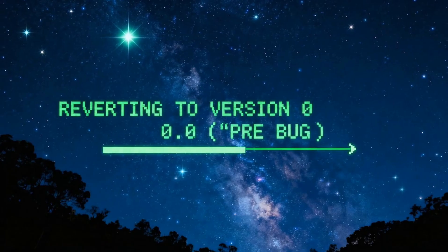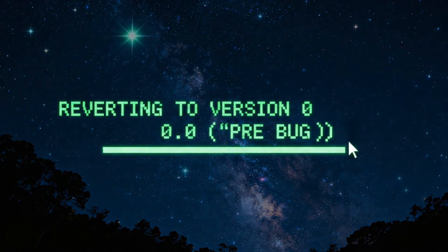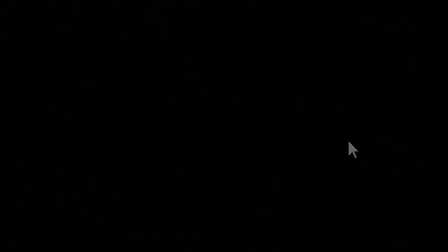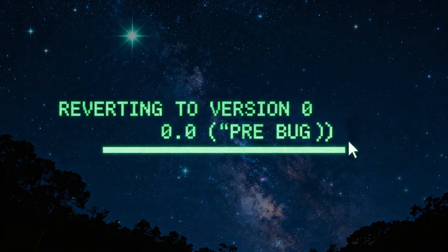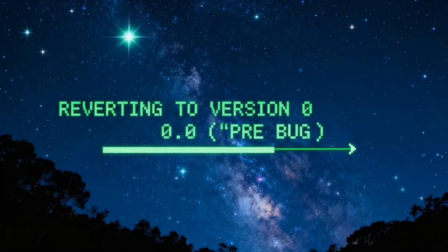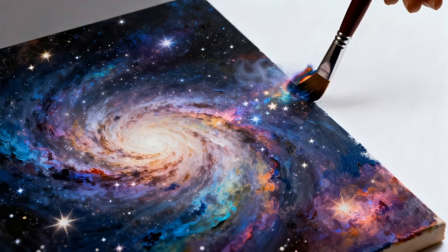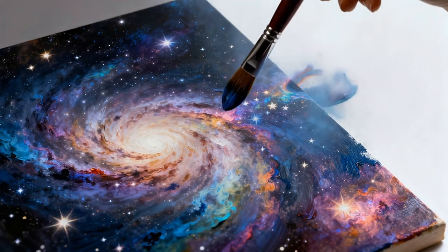The collapsing world around us froze. A single line of code appeared in the sky, in a simple, elegant font. It said, reverting to version 0.0. Pre-bug. The universe wasn't being destroyed. It was being uncreated.